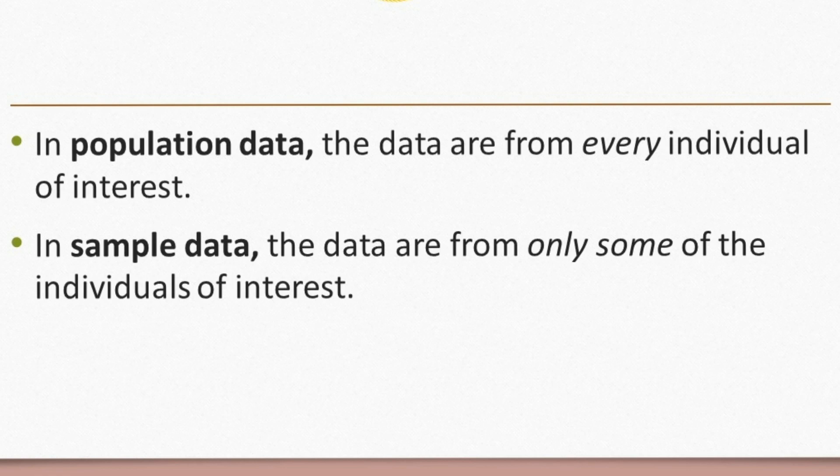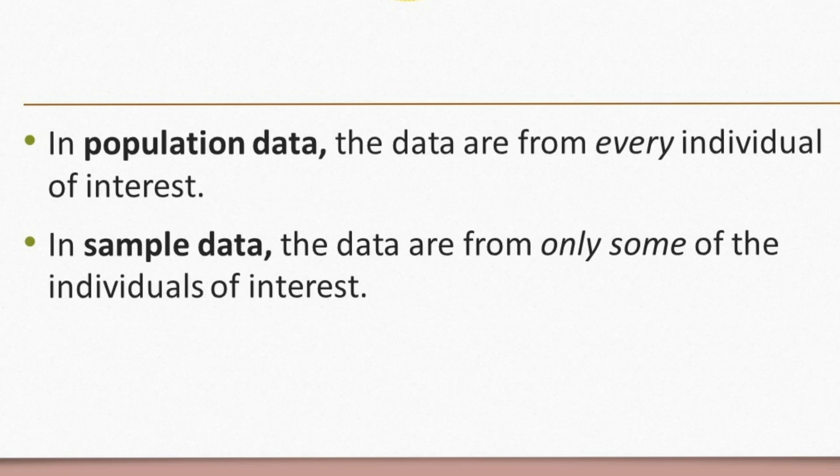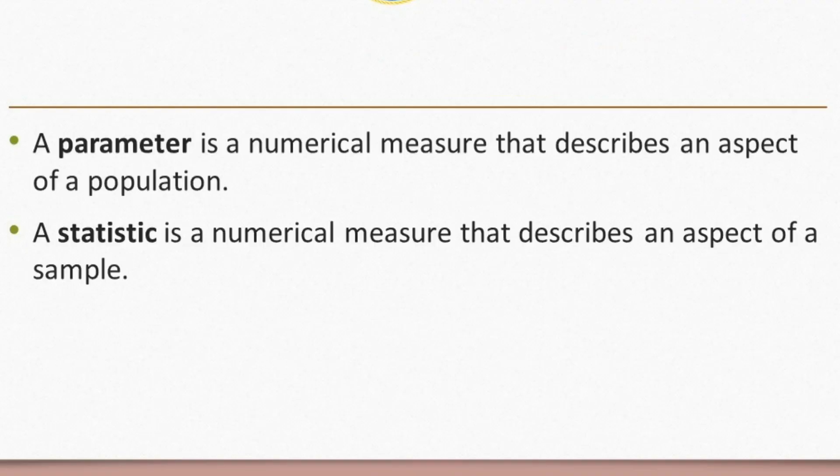We collect data from a population or a sample. In population data, the data are from every individual of interest. The size of the population depends upon how you define it — it may involve the whole country, or it may simply be a class of students. Determination of the population is relative. In sample data, the data are from only some of the individuals of interest — we only consider a subset of the population. If your population is the entire third-year level students, then the sample may contain one section of students.